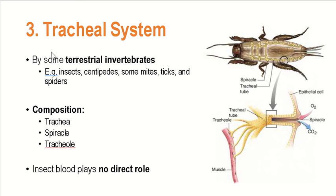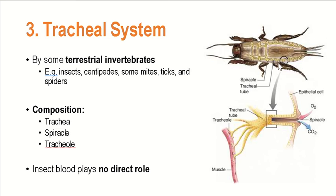The tracheal system is exhibited by some — not all — terrestrial invertebrates, such as insects, centipedes, some mites, ticks, and spiders. From the name 'tracheal system,' it refers to a system of air tubes. These trachea and tracheals are technically systems of air tubes found within these terrestrial invertebrates, such as the cockroach. In the figure, you can see the tracheal system of a cockroach — those yellow tubes along the body — found close to the skin and the outside environment.